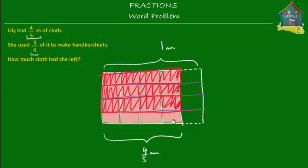This bottom piece — this last piece — is how much cloth is left. So if this whole pink thing is four-fifths of a meter, then three-quarters of it would be just this. This actually is three-quarters of four-upon-five meters, because the pink thing is four-upon-five and this red thing is three-quarters of the pink thing.